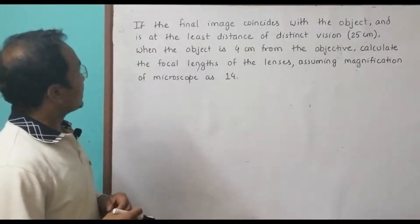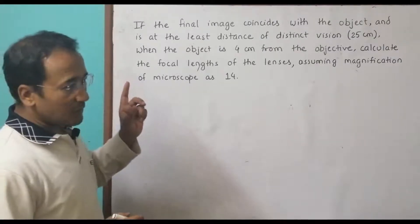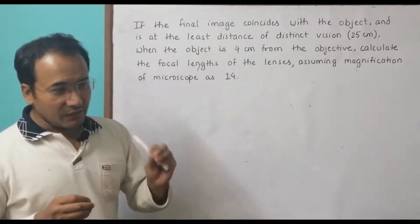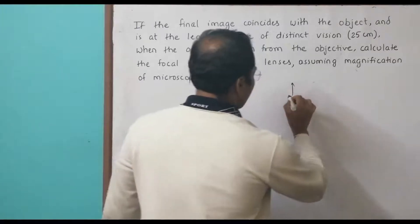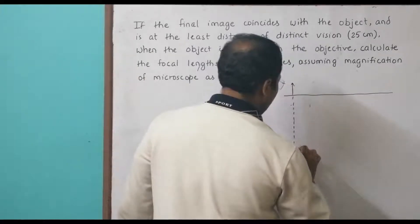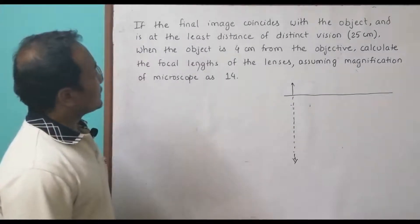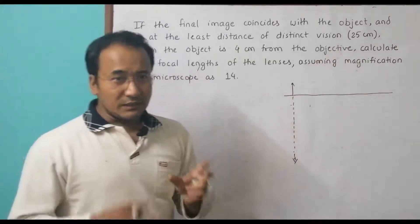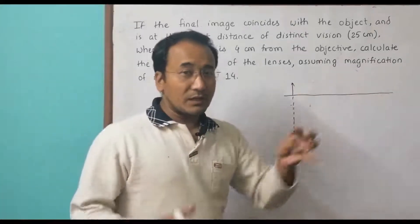The question says that the final image coincides with the object. In this microscope, the final image coincides with the object itself and is at the least distance of distinct vision — 25 centimeters from the eyepiece lens, for normal people.